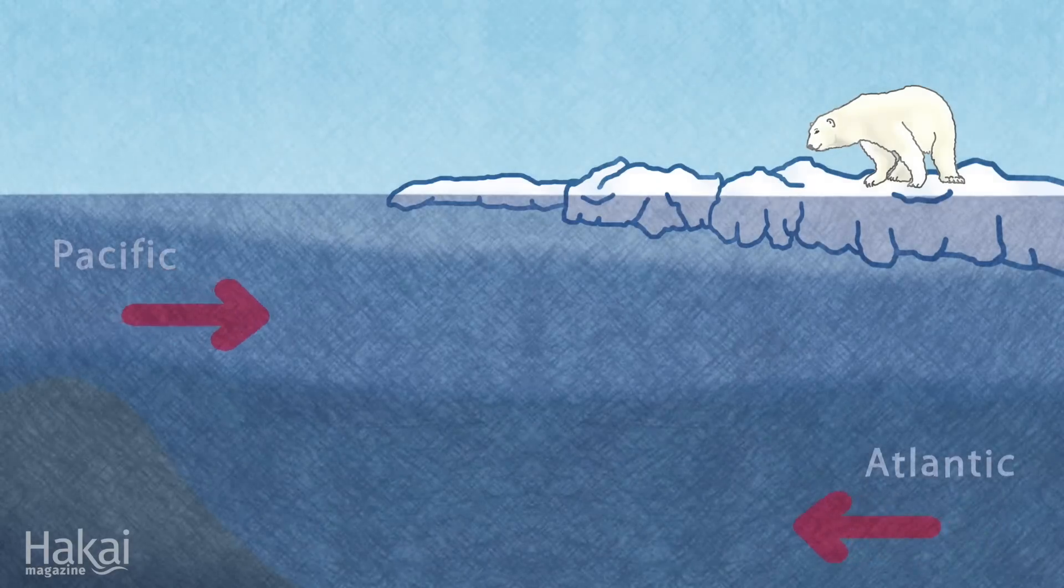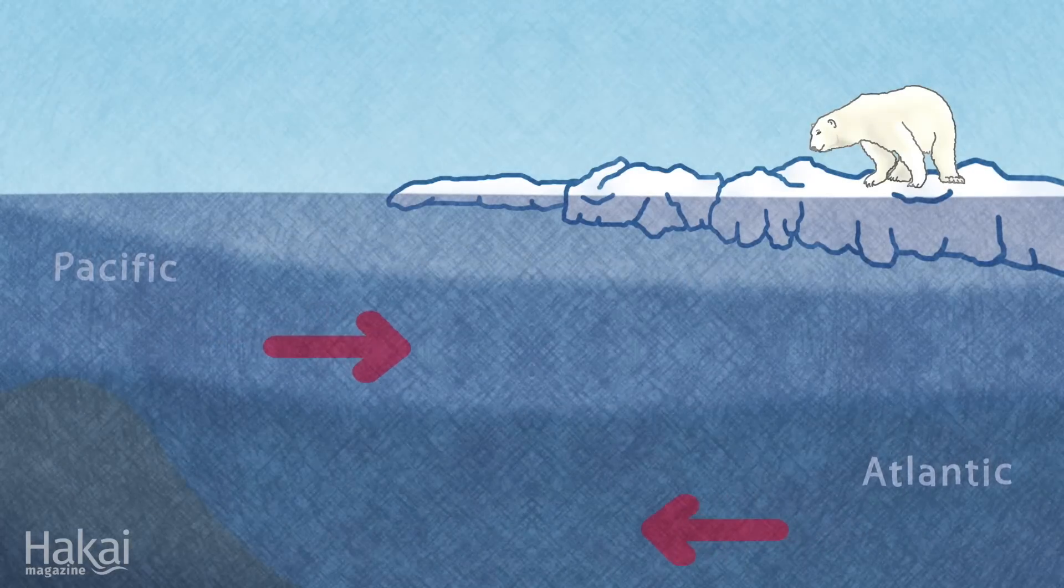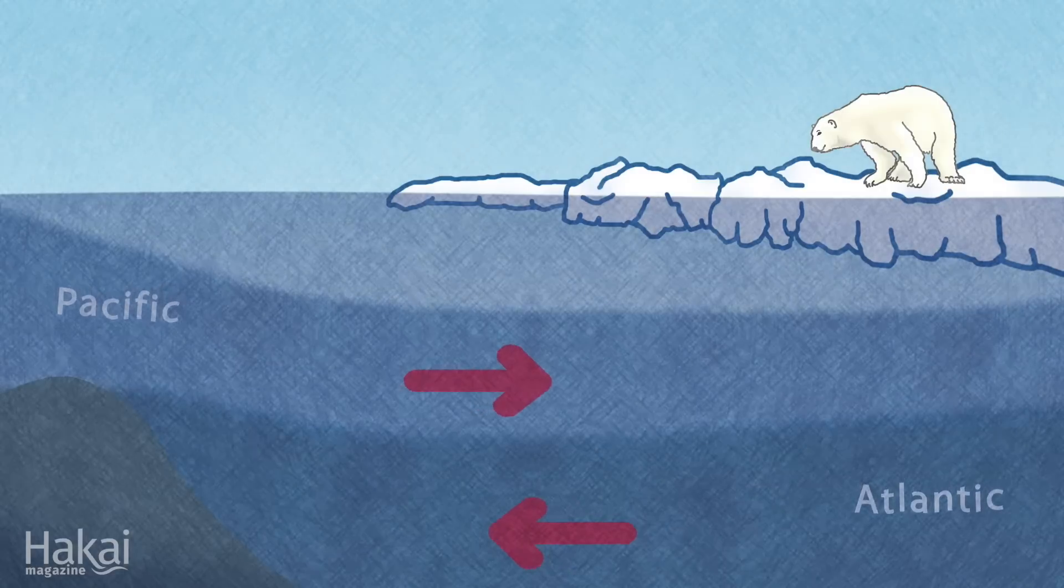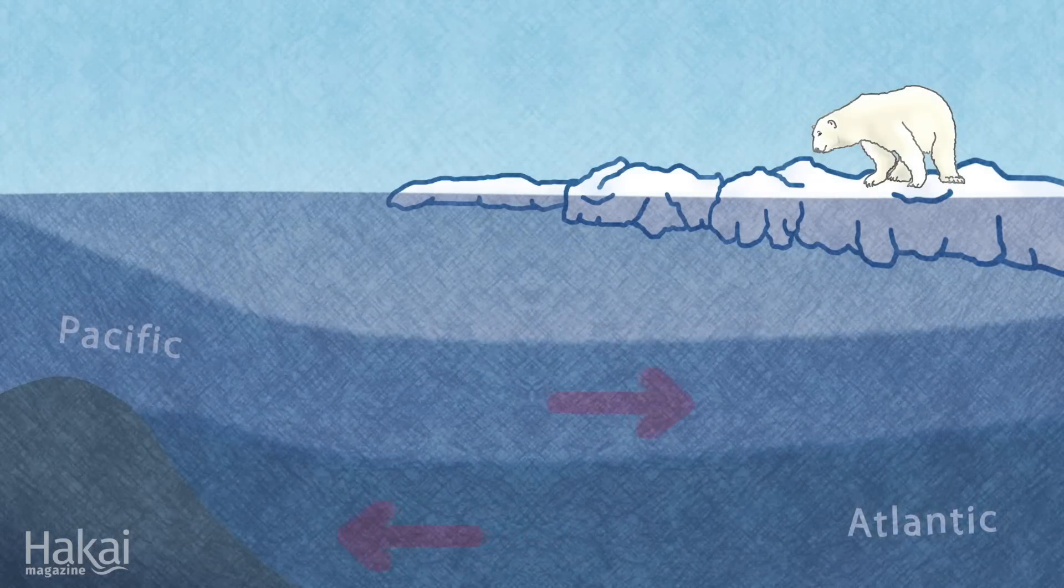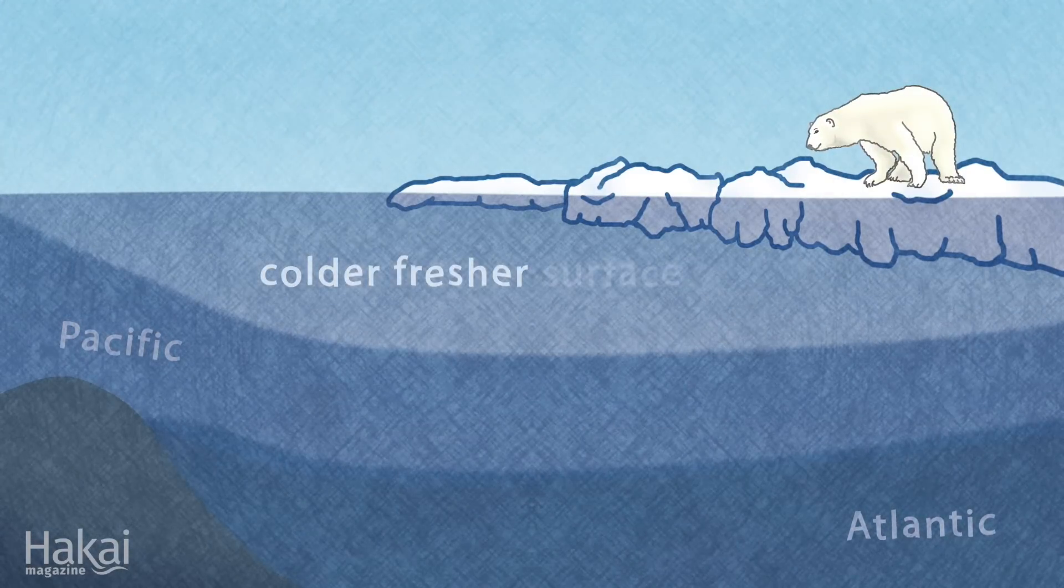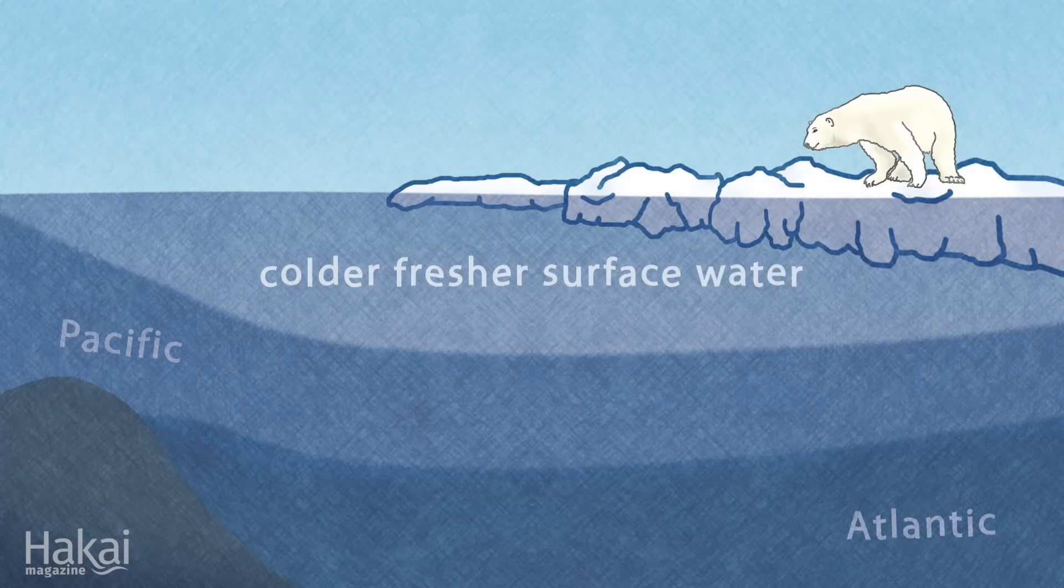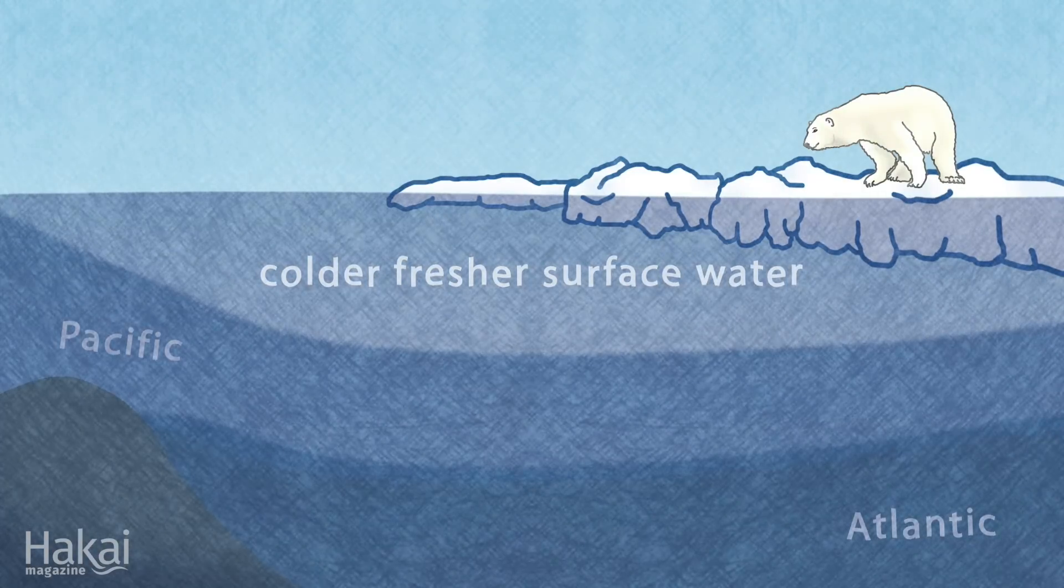The reason they don't is because this warm water is also saltier, which means it's heavier, causing it to sink deeper into the ocean. The colder, fresher surface water above partially shields the ice from this warmth.